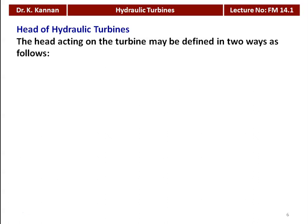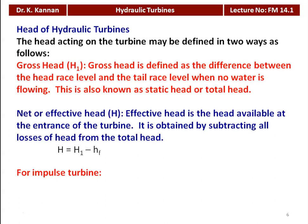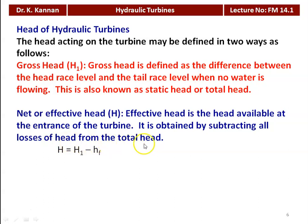The head acting on the turbine may be defined in two ways: gross head and net head. The gross head is the difference between the headrace level and the tailrace level when no water is flowing — also known as static head or total head. The net or effective head is the head available at the entrance of the turbine, obtained by subtracting all frictional losses from the total head. So, net head H = gross head minus head loss due to friction (Hf).